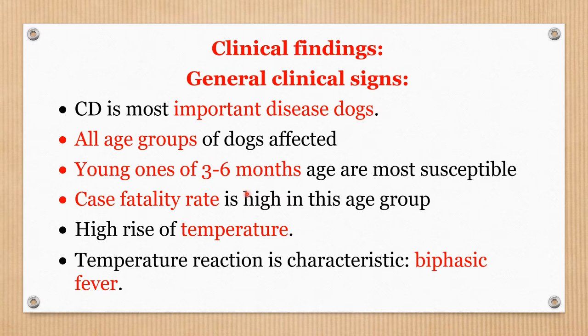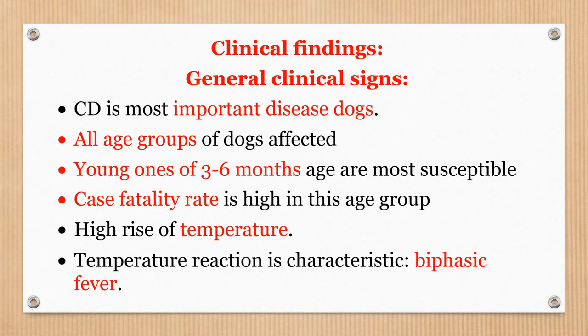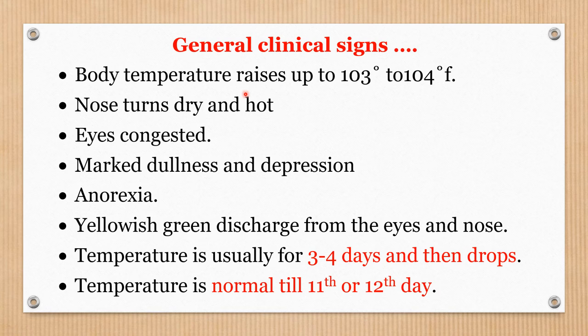From three to six months, immunity is not well developed, and additionally these viruses cause an immunosuppression effect. After six months, there is sufficient development of immunity because the immune-producing organs are properly developed. A high rise of temperature is characteristic of this disease. The characteristic fever is biphasic — also called diphasic fever — meaning there are two rises of fever during the course of the disease. Biphasic fever is the hallmark characteristic of canine distemper.